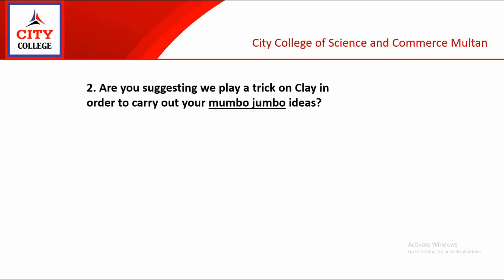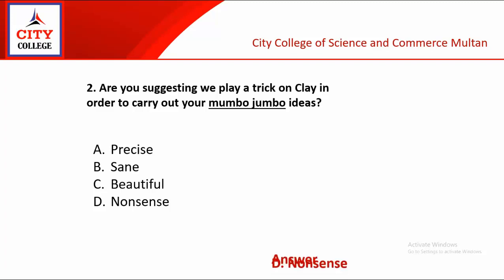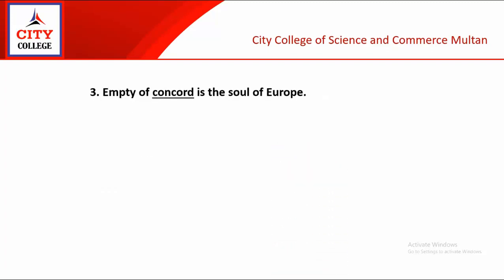Second objective: Are you suggesting we play a trick on Clay in order to carry out your mumbo jumbo ideas? The underlined word is 'mumbo jumbo' and the given options are precise, sane, beautiful, nonsense. Precise ka matlab hota hai exact; sane ka matlab hota hai dana, akalman; beautiful aap jaante hain; aur nonsense ka matlab hota hai be-waqoof. Mumbo jumbo ka matlab confused aur nonsense ke meaning mein hota hai, lehaza D option nonsense theek hai.